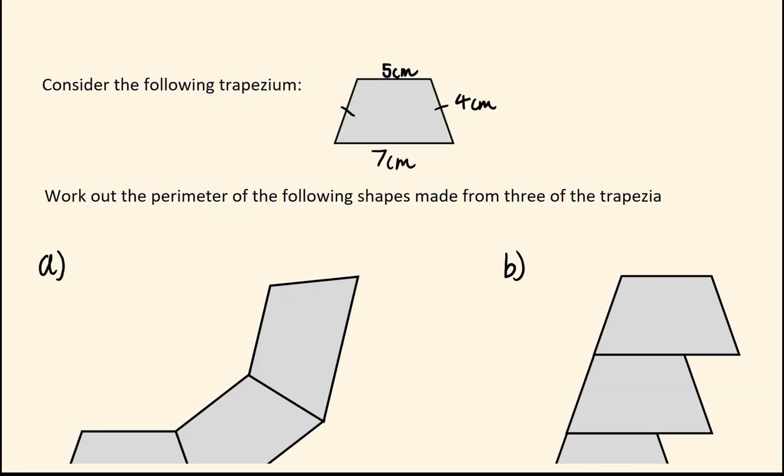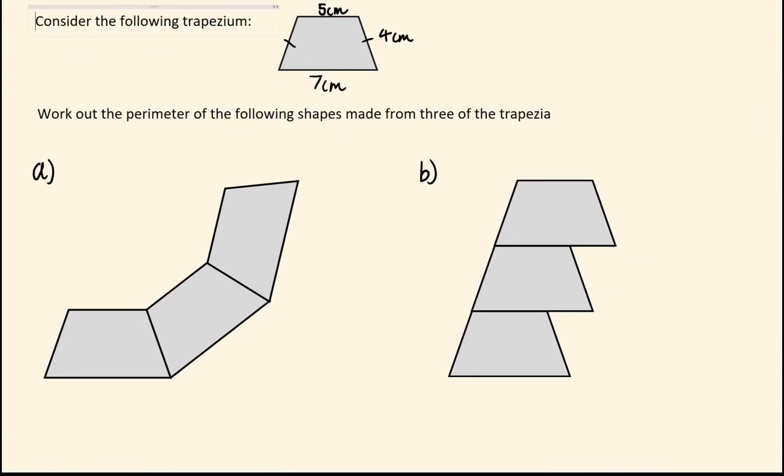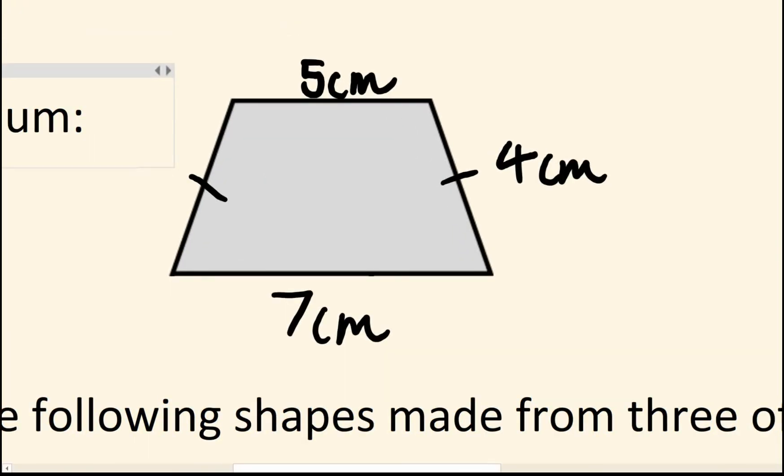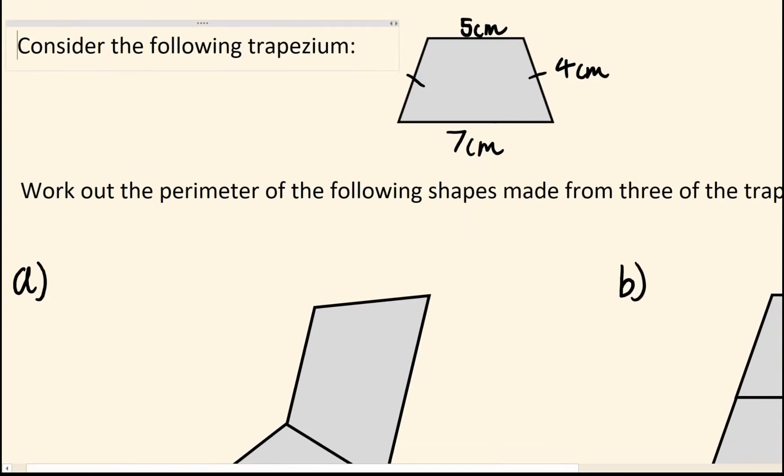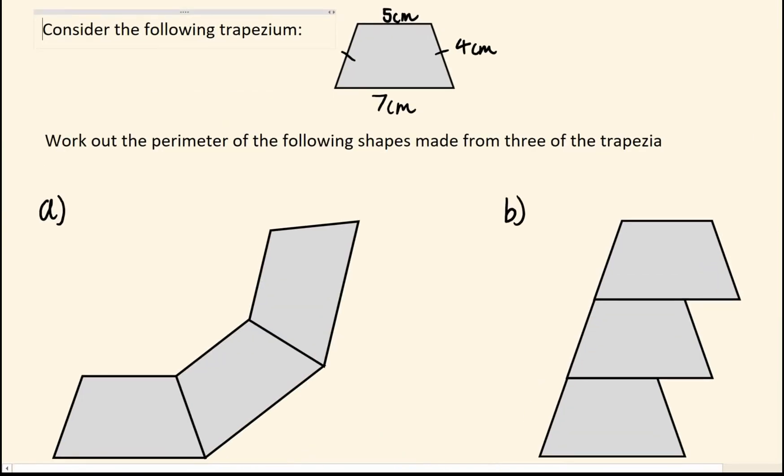Okay, I'll just do one more example using these trapeziums or trapezia. So you'll be given the dimensions for one of them and we have made the following shapes out of 3 congruent or 3 of the same trapezia. So for this we only need to work out the perimeter, not the area. So let's do that.